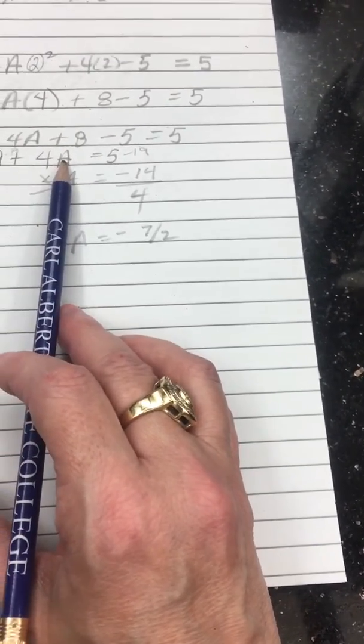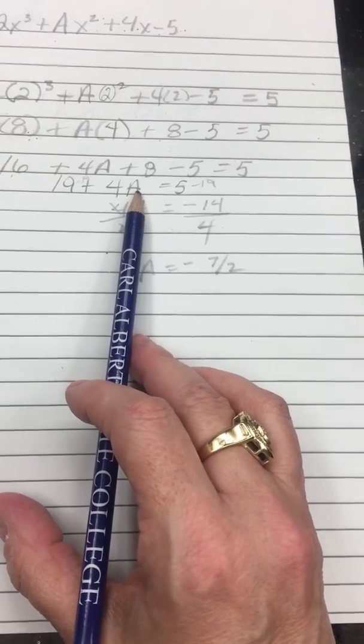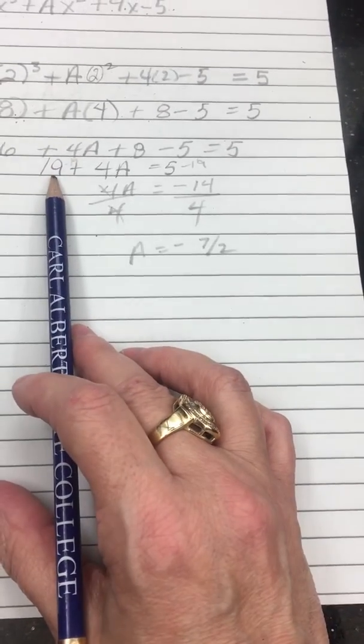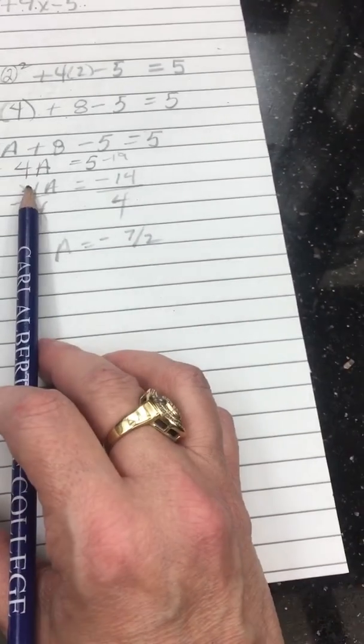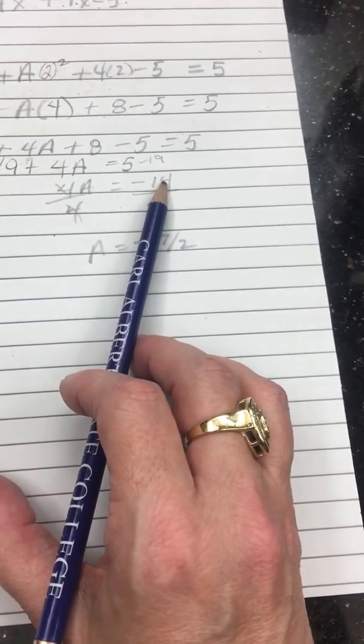You want your A isolated on this side of the equation all by itself, so subtract 19 from both sides to get rid of it. That leaves you with 4A is equal to a negative 14.